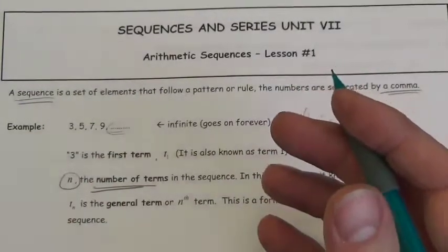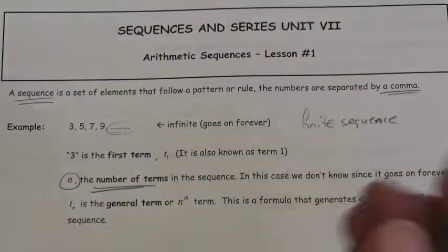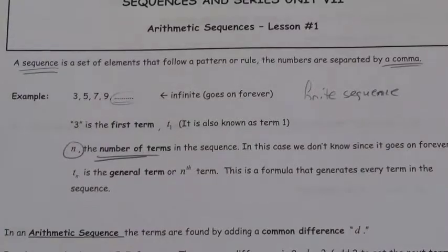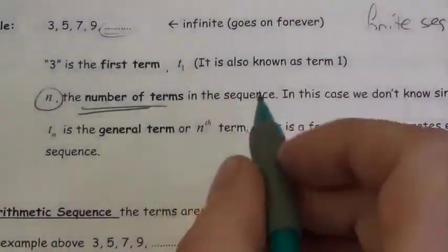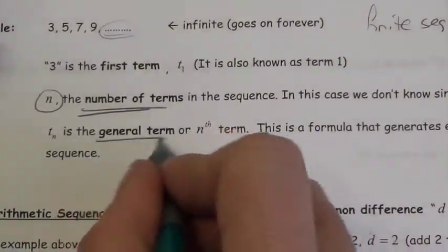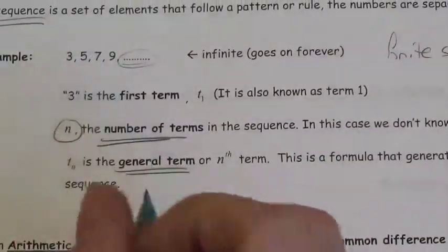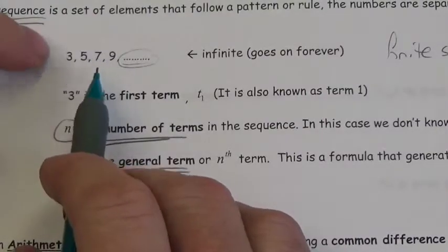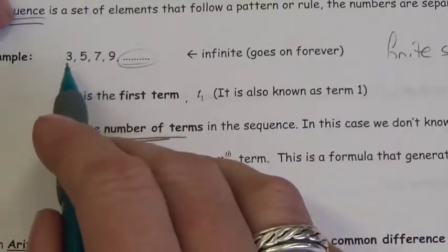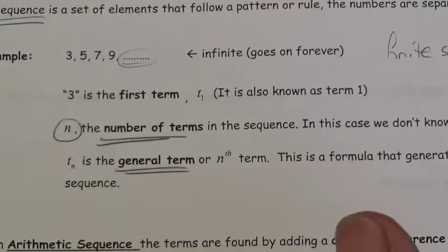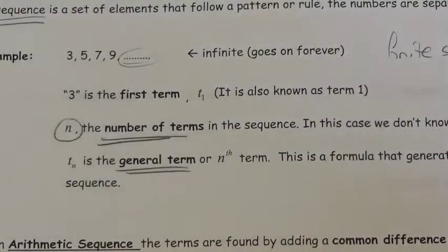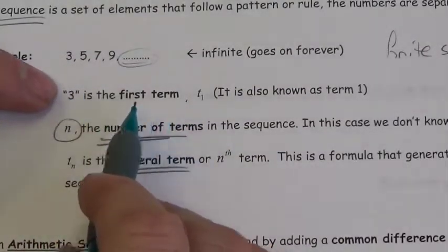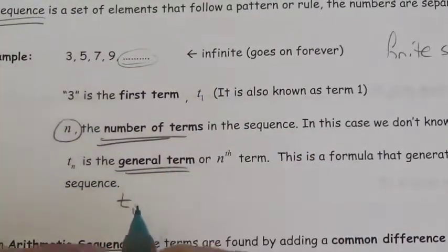One of the things we want to be able to do as we talk through sequences is be specific about which term we're talking about. That's why we have what's called the general term. Every term in the sequence we represent with the letter T with a subscript. We can't use different letters of the alphabet — once I get 26 numbers in the sequence, I'm done with the alphabet. So we use the letter T, and three is the first term here — we use subscript one to be our first term.